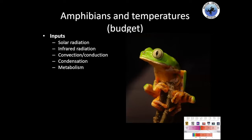There are different aspects we need to take into account when talking about the temperature budget of the amphibian — for example, which way amphibians gain warmth. The inputs can be solar radiation: if they go into the sun and bask, they are going to get some heat through infrared radiation. They can also gain temperature through convection or conduction, depending on where they are located, and also through condensation, on a very small scale. It's also reported that some amphibians produce some warmth.